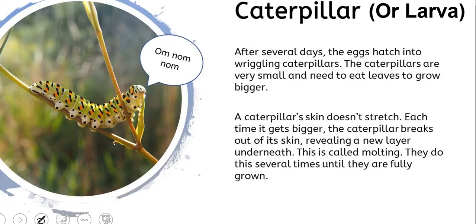A caterpillar's skin does not stretch, so each time it gets bigger, the caterpillar actually breaks out of its skin, revealing a new layer of skin underneath — kind of like how a snake sheds its skin.